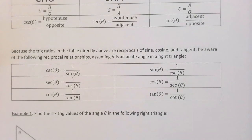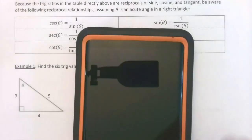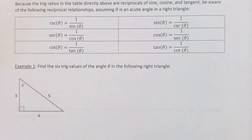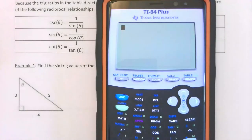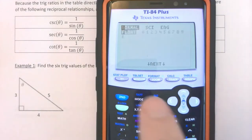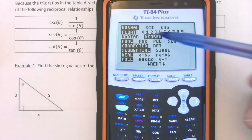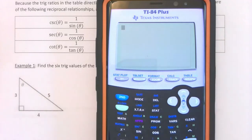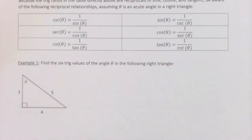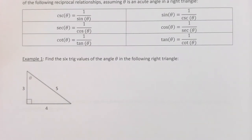That's it for introductions — what comes next is examples. At some point today you're going to need a calculator, so turn it on. All of our examples today are in degrees, so find the mode button and make sure the angle option is set to degree and not radian. Example one: find the six trig values of the angle theta in the following right triangle.